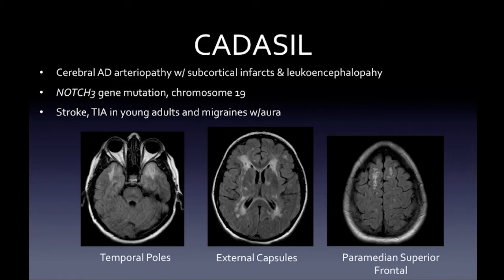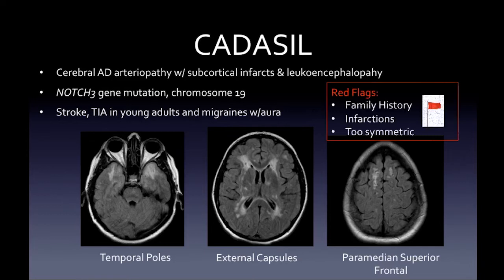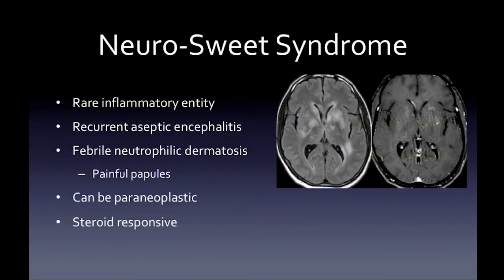CADASIL is another vascular MS mimic — cerebral autosomal dominant arteriopathy with subcortical infarcts and leukoencephalopathy, linked to chromosome 19. It presents with stroke and TIAs in young adults with migraines. Classic locations: anterior temporal lobes, external capsules, and paramedian superior frontal lobes. Red flags: prominent family history (MS shouldn't have one), infarctions, and the lesions are typically very symmetric across those three classic locations.